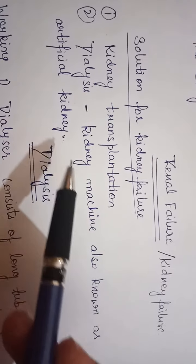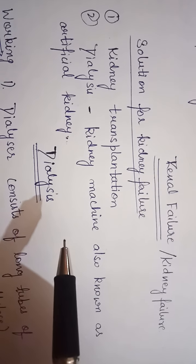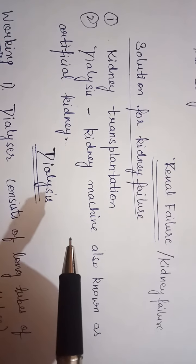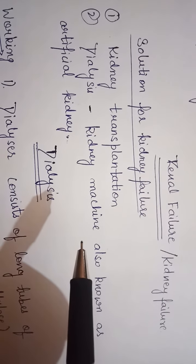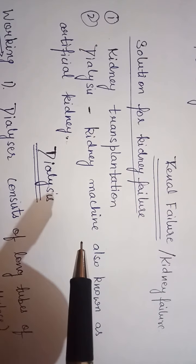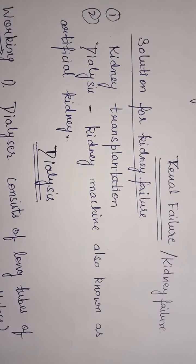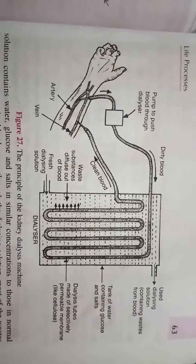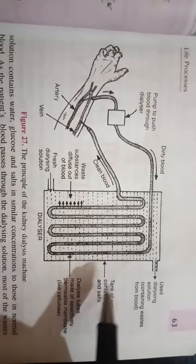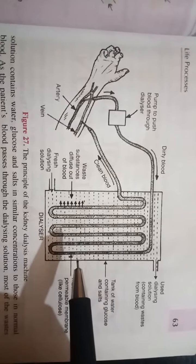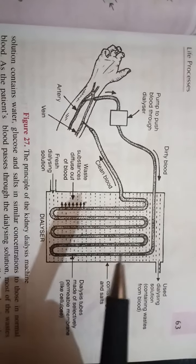The second option is dialysis. Dialysis means the artificial kidney — it is a machine which functions as a kidney and performs the function of the kidney. This here is a dialysis machine.